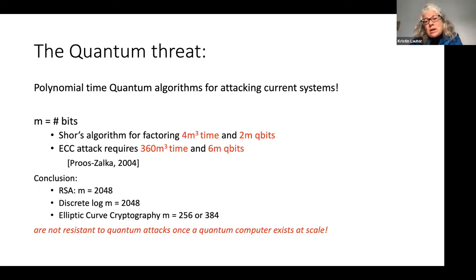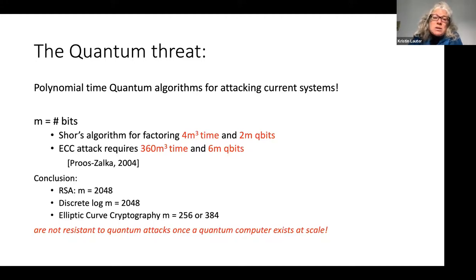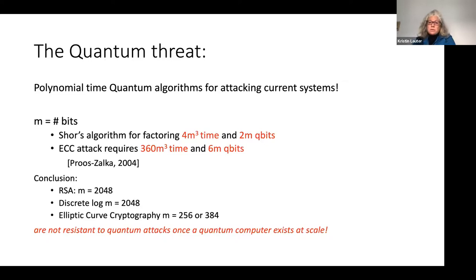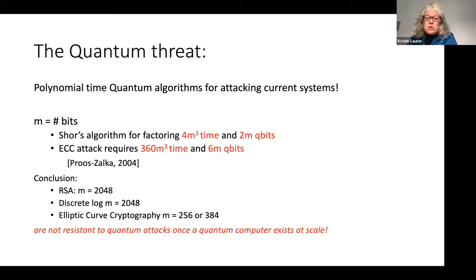For elliptic curve cryptography, the running time is still roughly cubic — about 360m³ — but requires roughly 6m qubits, according to estimates by Proos and Zalka, which we made more precise in a 2019 Eurocrypt paper with the quantum algorithms group at Microsoft Research. If you look at current minimum standards: 2048-bit RSA is a minimum US government standard, requiring a quantum computer of roughly 4,000 qubits. For elliptic curve cryptography with 256-bit keys, you'd need roughly 1,500 qubits.